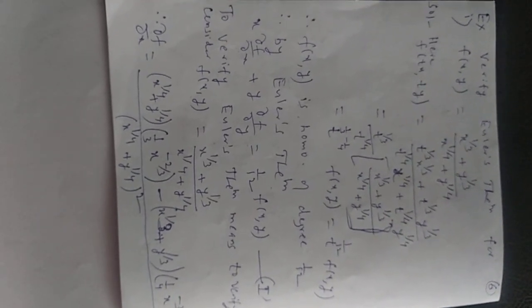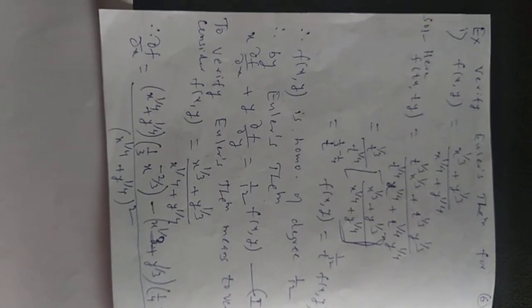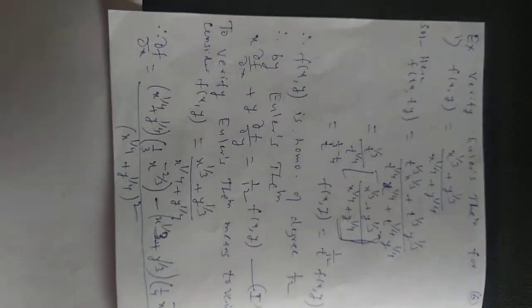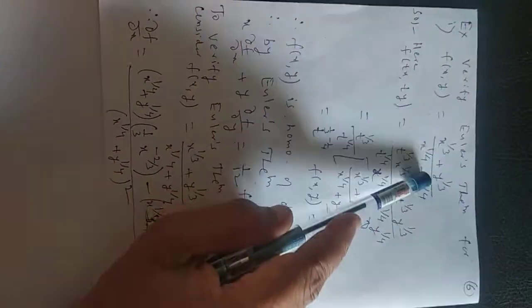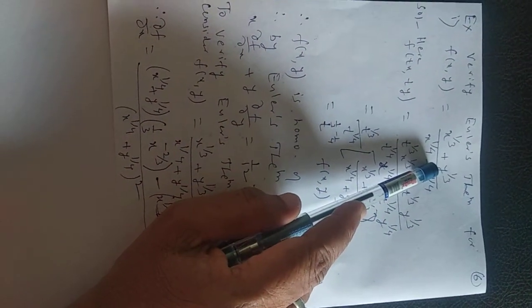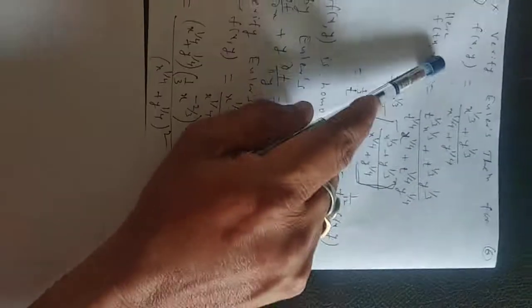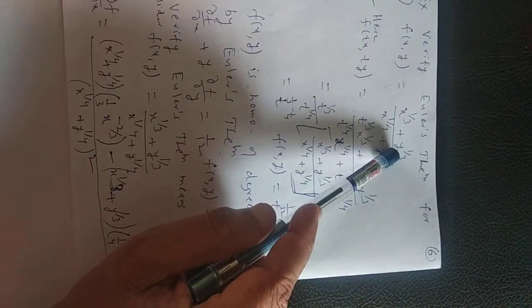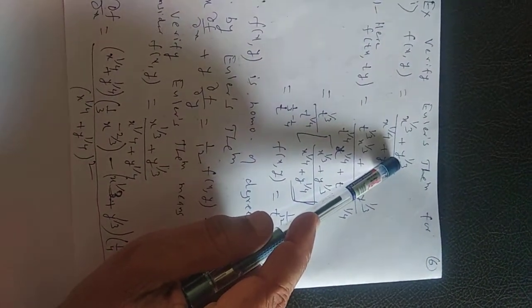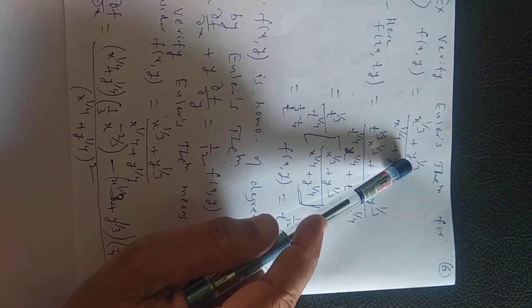Now we come to the next part, that is the second part: verify Euler's theorem for f(x,y) equal to this one. So here f(x,y) is equal to this one. Therefore, we will see whether this one is homogeneous, and if it is homogeneous, then what is its degree.